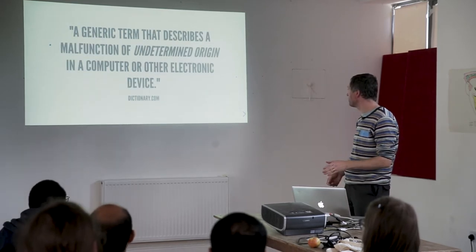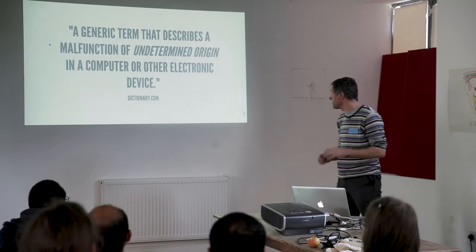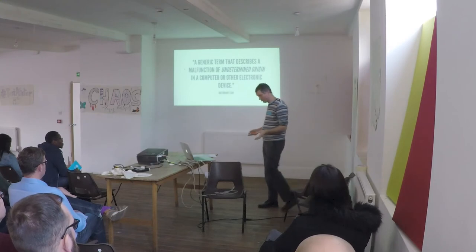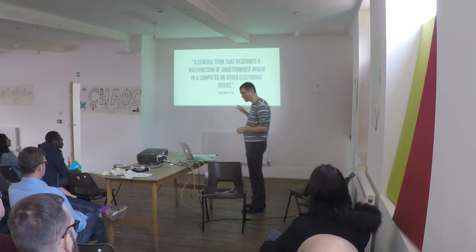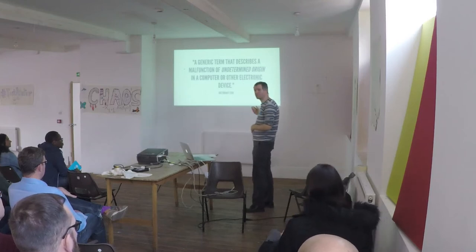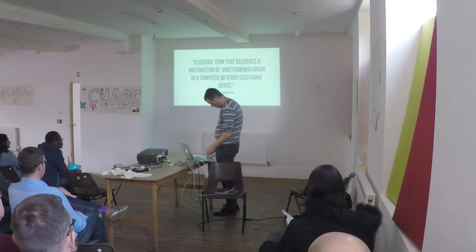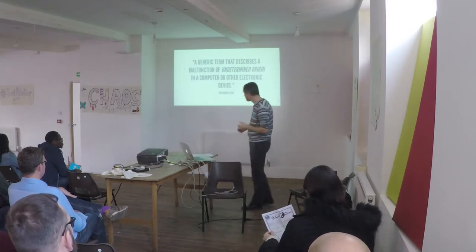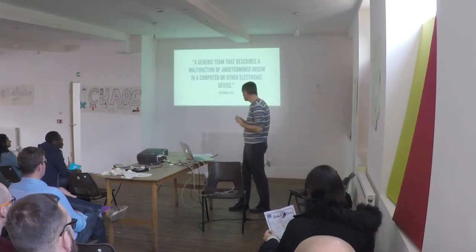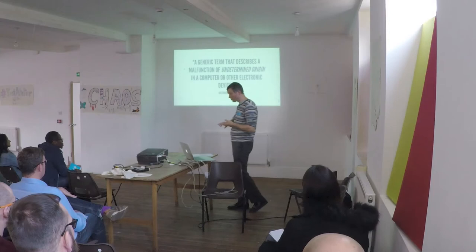Let's try dictionary.com: 'A generic term that describes a malfunction of undetermined origin in a computer or other electronic device,' which is great because it's expanded out from just being the computer into other devices as well. But the 'undetermined origin' is a bit of a problem. So if we determine its origin, does it stop being a bug? It's still there. One of the problems with the use of the term 'bug' — or 'defect' or other terms — is that we use it to mean different things.